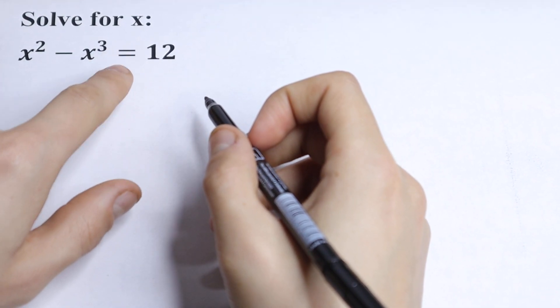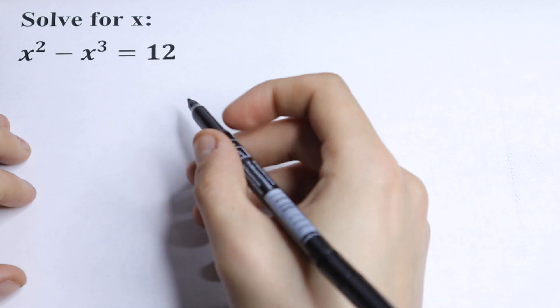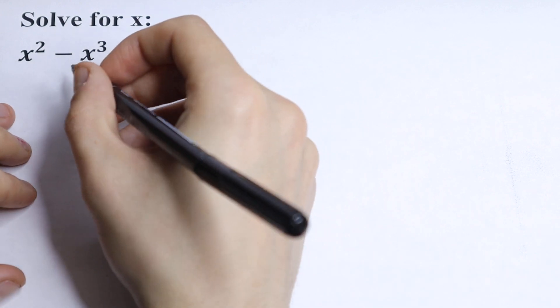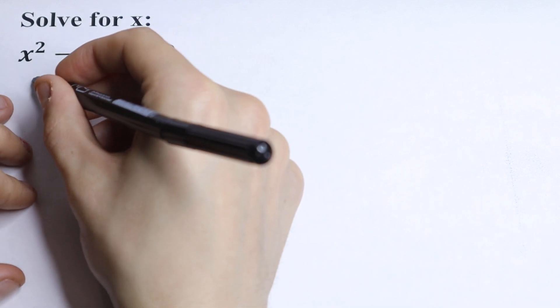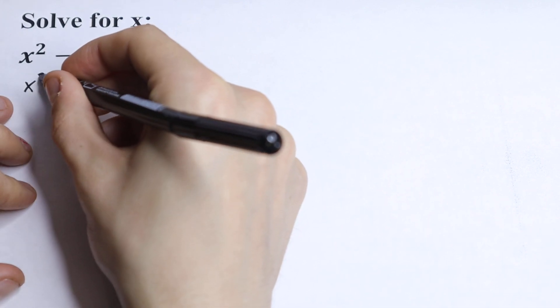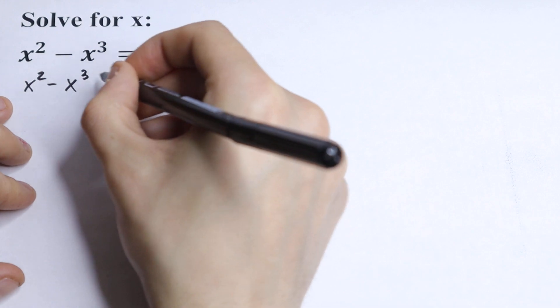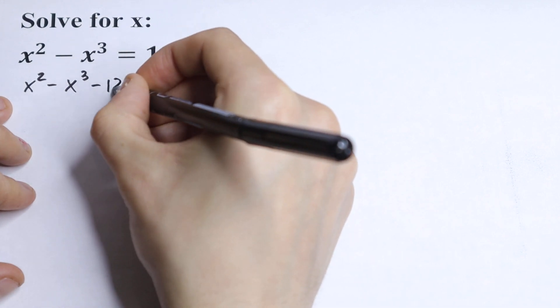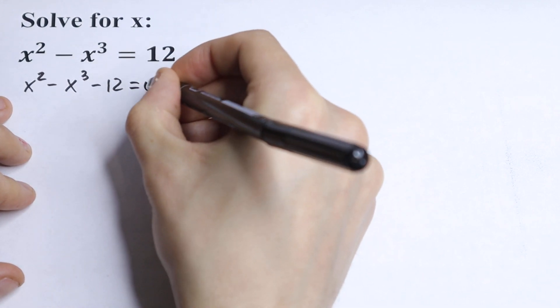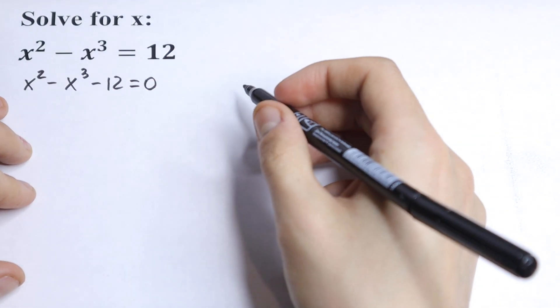First of all, let's bring this 12 to the left. So we will have x squared minus x cubed minus 12 equal to 0.